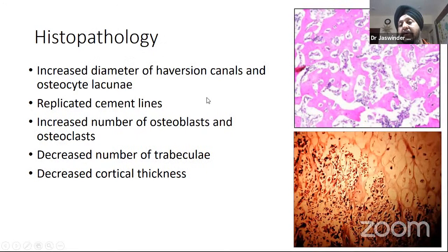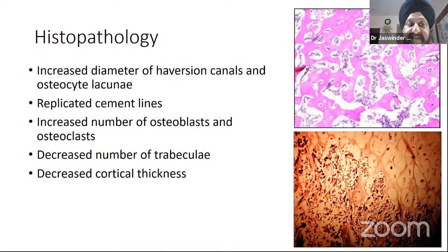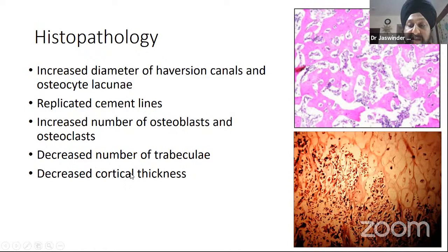Histopathologically, there is increased diameter of Haversian canals and osteocyte lacunae, replicated cemented lines, increased numbers of osteoblasts and osteoclasts due to increased bone turnover, decreased number of trabeculae, and decreased cortical thickness — reflecting poor bone density overall.